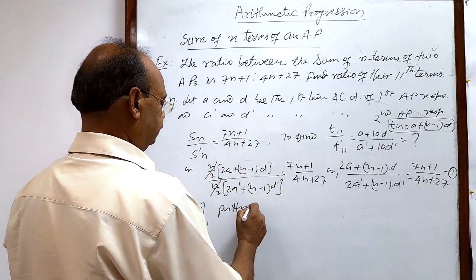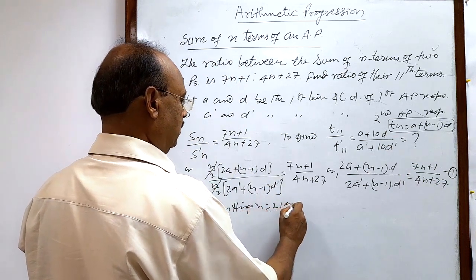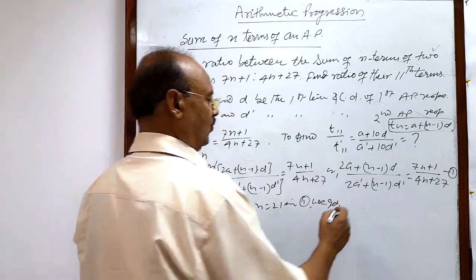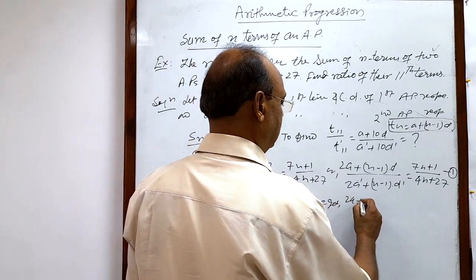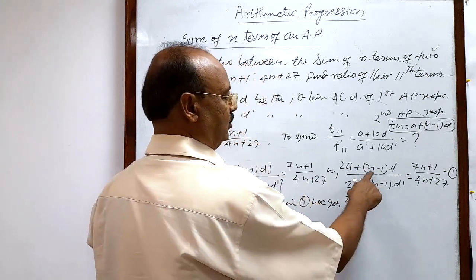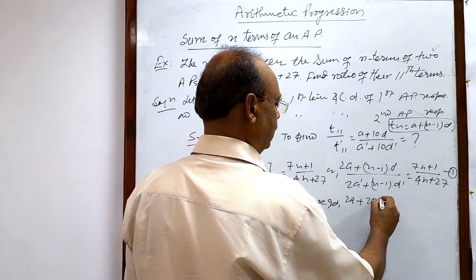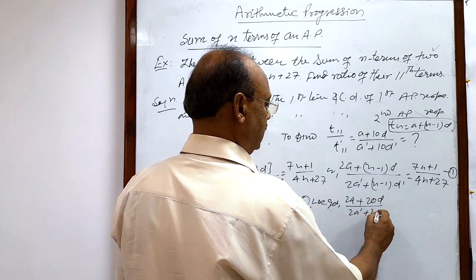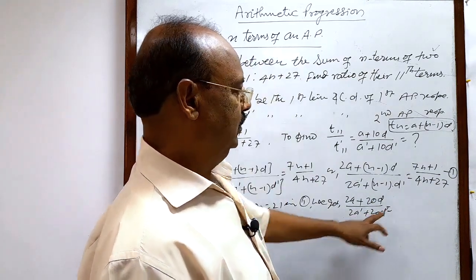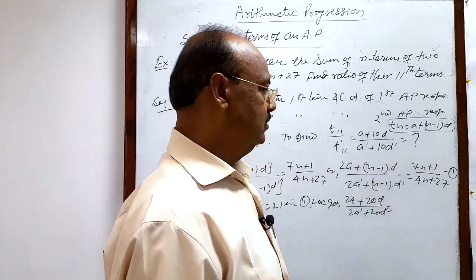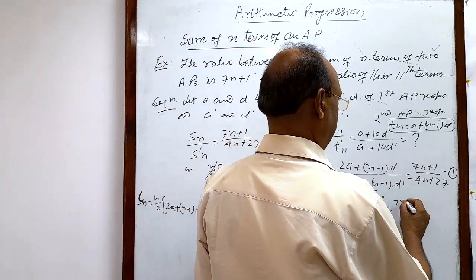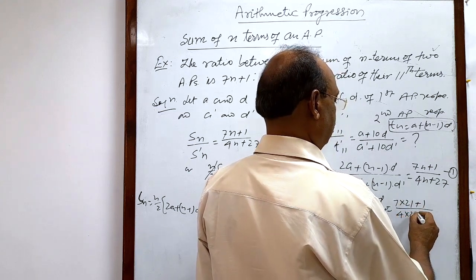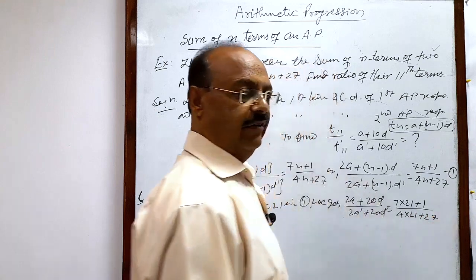Putting n = 21 in relation number 1, we get [2a + (21−1)d] / [2a' + 20d'] = [2a + 20d] / [2a' + 20d']. On the right-hand side, we substitute n = 21: (7 × 21 + 1) / (4 × 21 + 27).